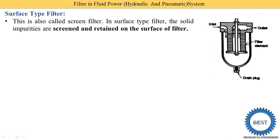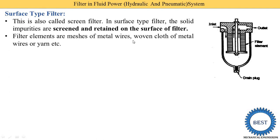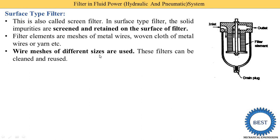Filter elements are made of masses of metal wires, woven cloths of metal wires, and yarn. The filter element looks like a strainer, with wire gaps of different sizes depending on the system. These filters can be cleaned and reused. It is called a surface type filter because the dust is collected on the surface of the wire mesh.